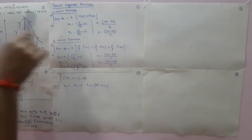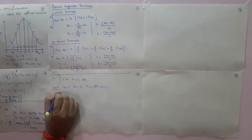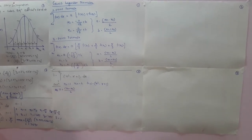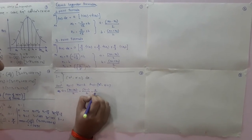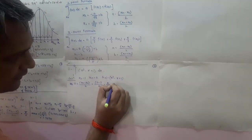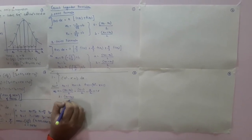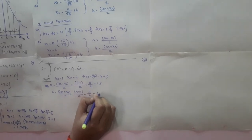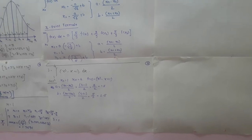The formulas are given to us. First we should evaluate x1, and for that we require the value of a. a equals (xn minus x0) divided by 2, which is (4 minus 1) divided by 2, equal to 3/2, that is 1.5. And b equals (xn plus x0) divided by 2, that is (4 plus 1) divided by 2 equals 5/2, which is equal to 2.5.